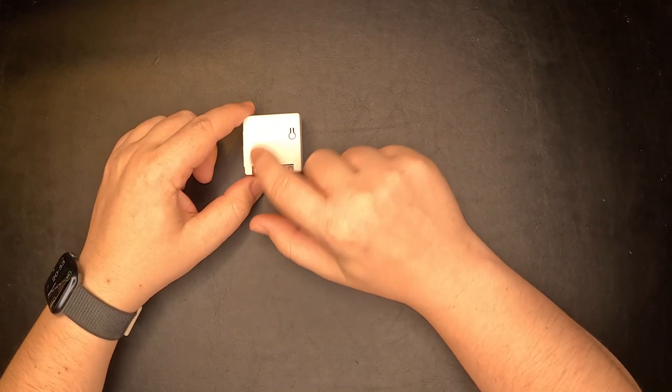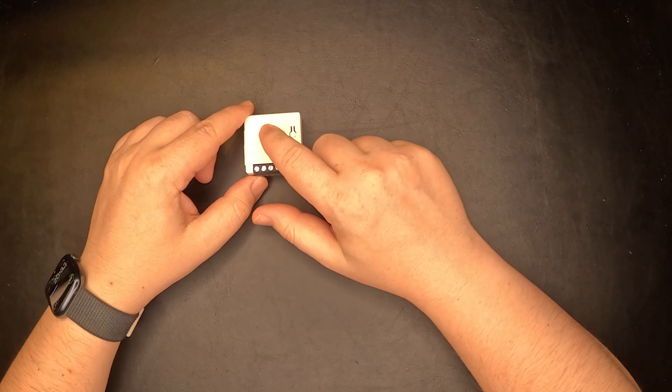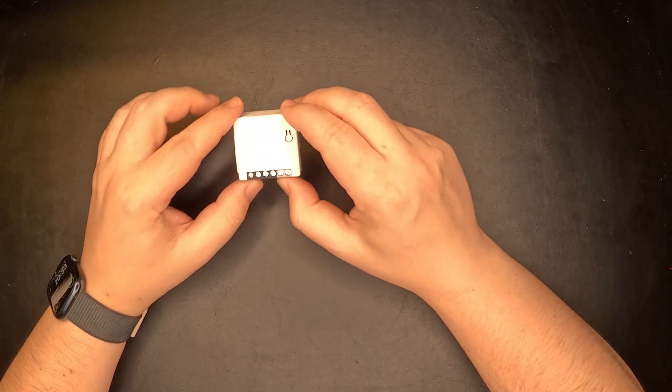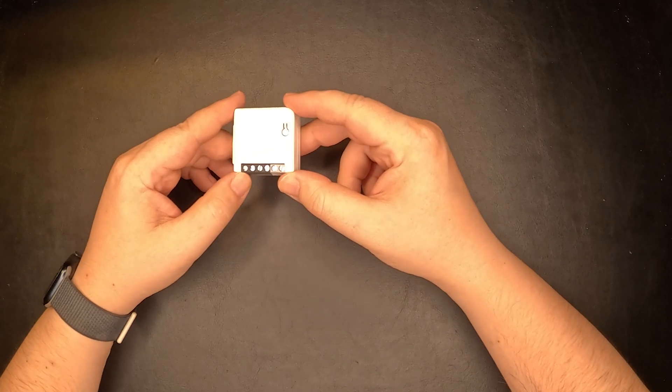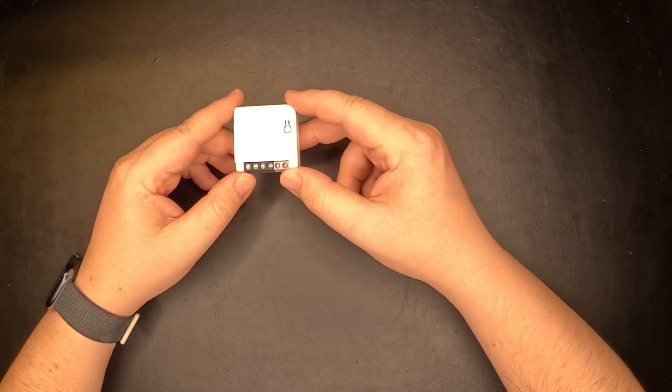This relay that is part of the Sonoff ZB Mini is a wet relay. That means the voltage you inject into the device to power it is the voltage you will get out towards your consumer.